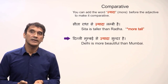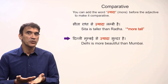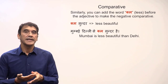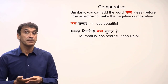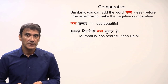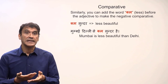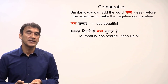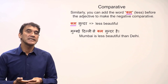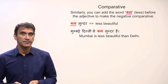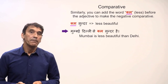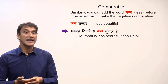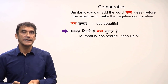'Dilli Mumbai se zyada sundar hai' — Delhi is more beautiful than Mumbai. In Hindi there is also a way to express negative comparison. The word 'kam', which means 'less', can be added before the adjective. So 'kam sundar' means 'less beautiful'. For example: 'Mumbai Dilli se kam sundar hai' — Mumbai is less beautiful than Delhi.